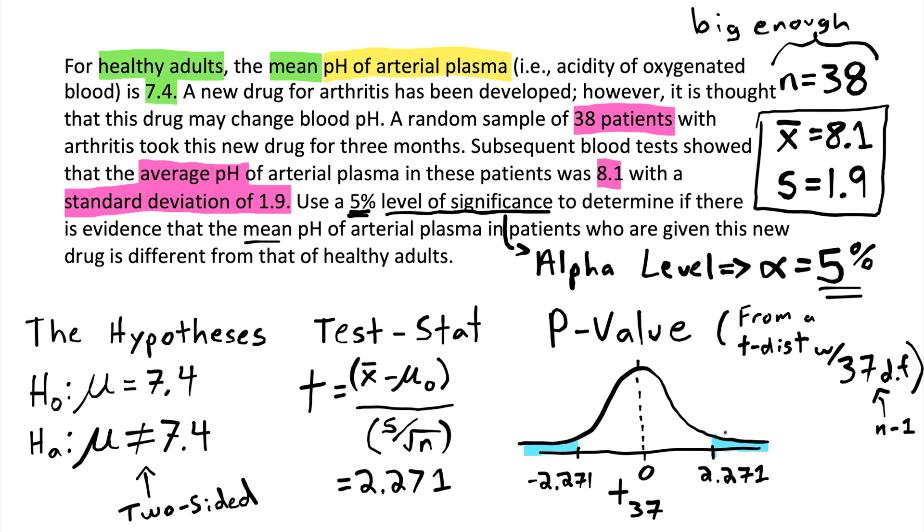We're going to go ahead and find the area above 2.271 in a t-distribution with 37 degrees of freedom. There's lots of ways to do that. There are applets on the internet that will do it for you. There are computer programs such as R or Microsoft Excel or TI-83 or TI-84 calculators can find these areas for you. However you want to find it, it turns out that this upper area is 0.0145, which makes this lower area that same value. So the p-value is just the sum of these two numbers. It's this number plus this number, which ends up being 0.029.